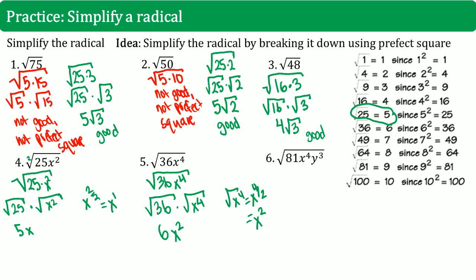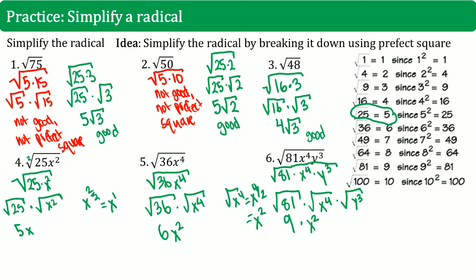For the last one, problem 6: square root of 81x to the 4th times y to the third. We break it into three parts: square root of 81, square root of x to the 4, and square root of y to the third. Square root of 81 is 9. x to the 4 becomes x squared. For square root of y cubed, we can't simplify that — it stays as the square root of y cubed. So the final answer is 9x squared times the square root of y to the third.